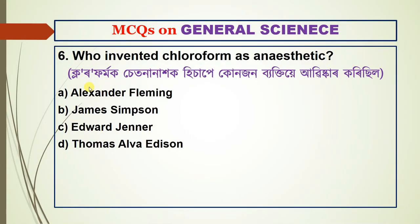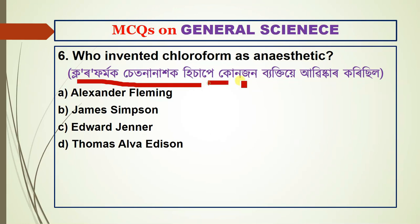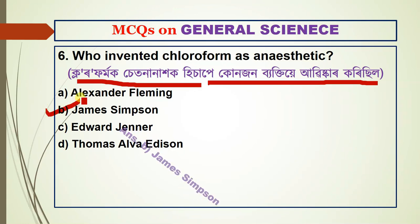Question number six: who invented chloroform as an anesthetic? The answer is James Simpson — option B.